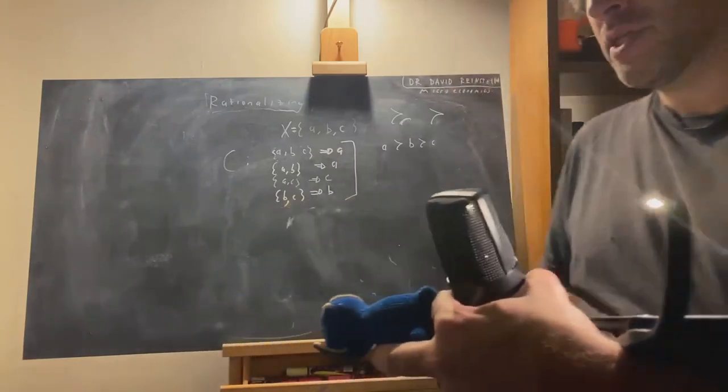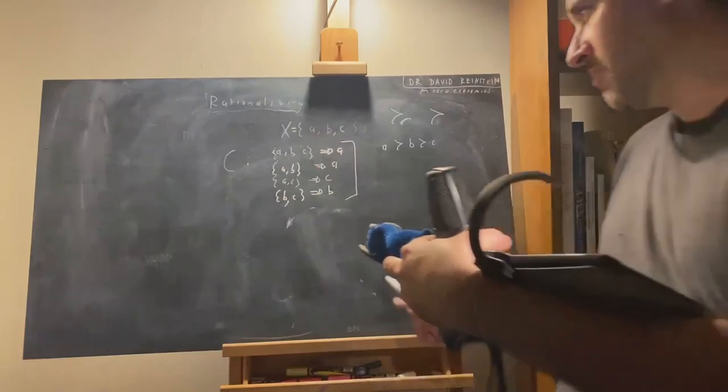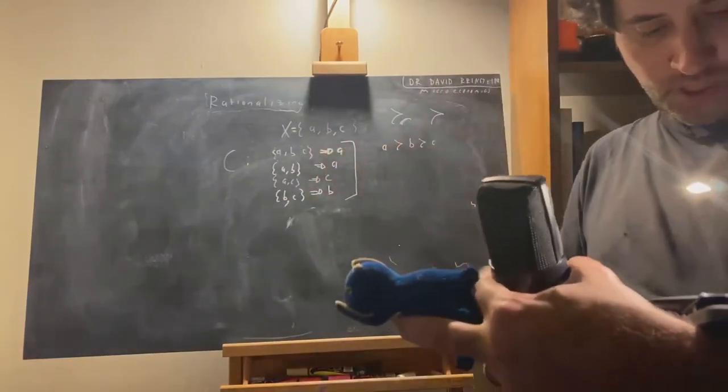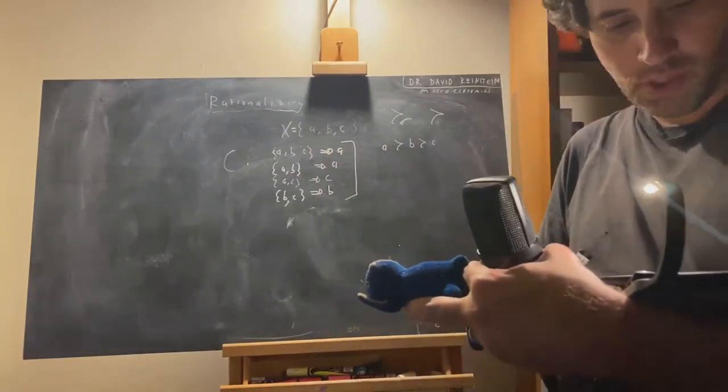The whole point is that the choice must be the same in every set in which it appears. So in the example they say, once I add the frog's legs, the other choices seem different. Well, that's not the same choice then, is it?